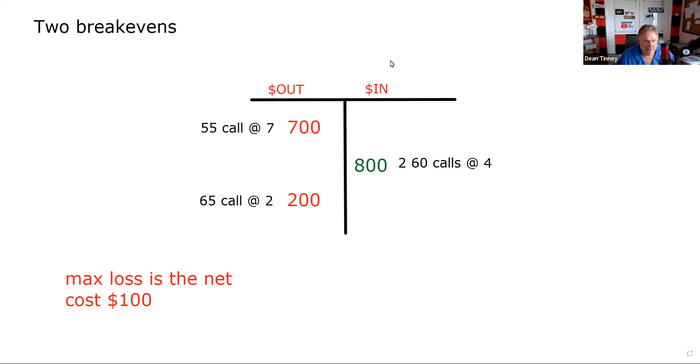All right, so a spread has two—a butterfly spread has two break-evens. And again, if you are a Series 4 or a 9 and you get something like this, I would just shop my answer set and plug in what's offered to me as the break-evens and do my T. The way we get the lower break-even is we take the lower strike, 55, plus the net premium, which is 1, for 56.